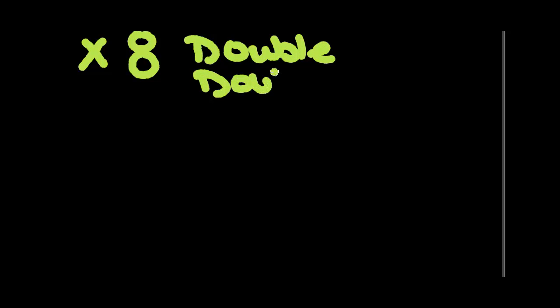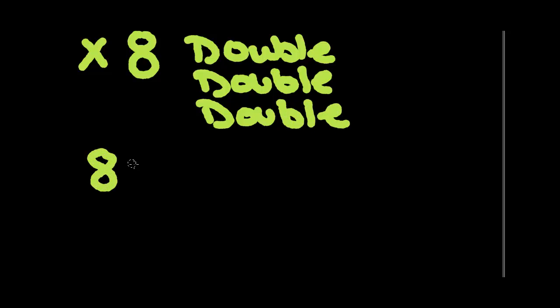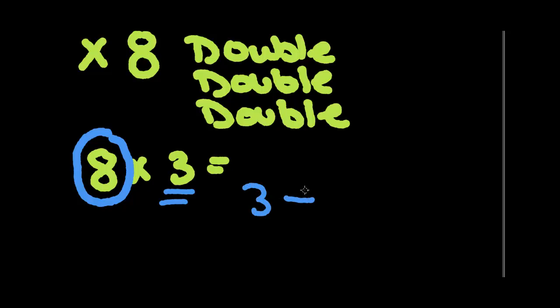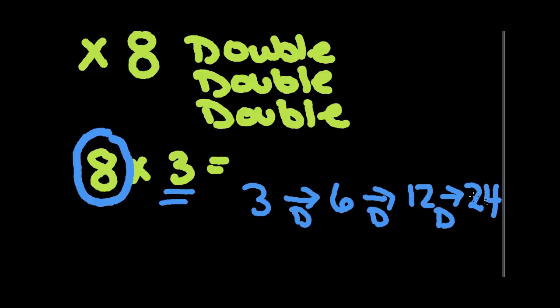Now let's talk about our eights. When we did times eight, we learned the rule double, double, double. So if we had eight times three, we would circle the eight since that was our rule, and the action would be on the three. We would take the three and double it to get six, then double the six to get twelve, and one more double to get 24. So eight times three is 24.